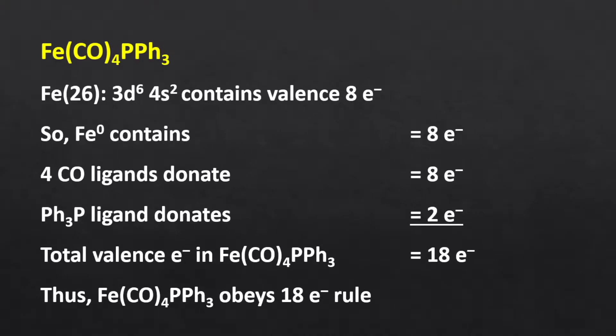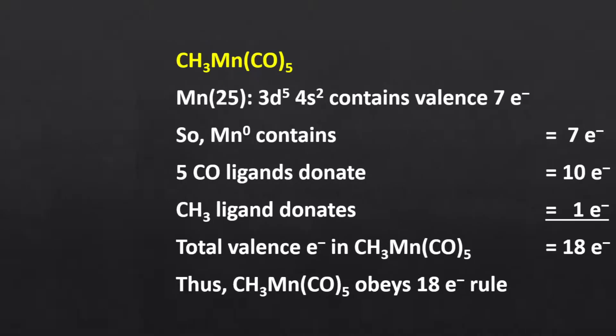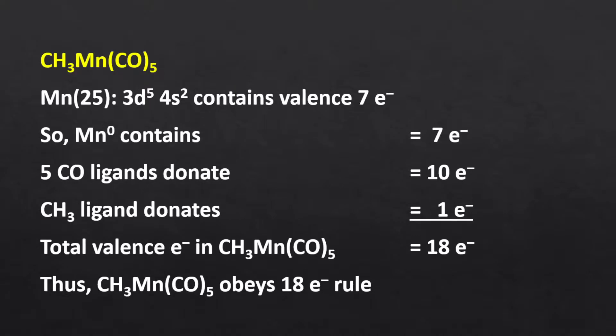Triphenylphosphine iron tetracarbonyl: the oxidation state of iron in this complex is 0. Both triphenylphosphine and carbonyl are 2 electron donors. So 8 electrons from iron, 2 from triphenylphosphine, and 8 from 4 carbonyls — overall 18 electrons. This complex follows the 18 electron rule and is stable. In another complex, the oxidation state of manganese is 0. Methyl ligand is a 1 electron donor. So 7 electrons from manganese, 1 from methyl, and 10 from 5 carbonyls — overall 18 electrons, making this complex stable.